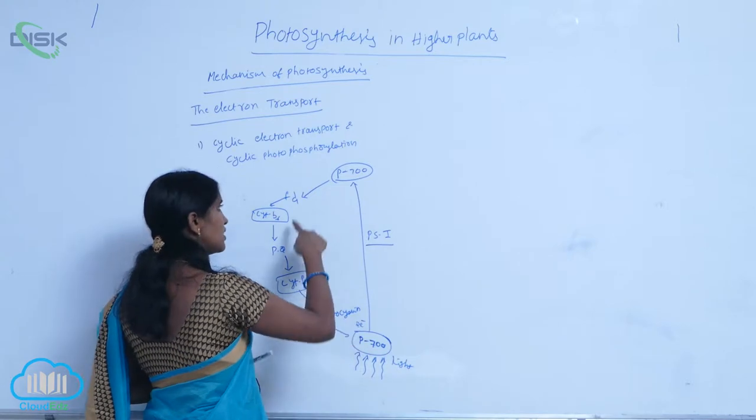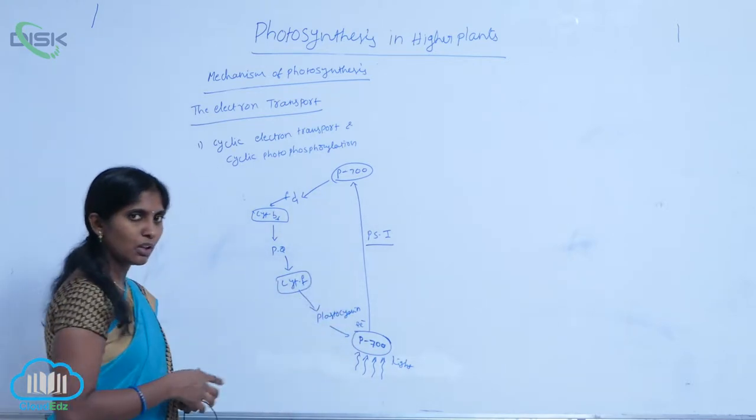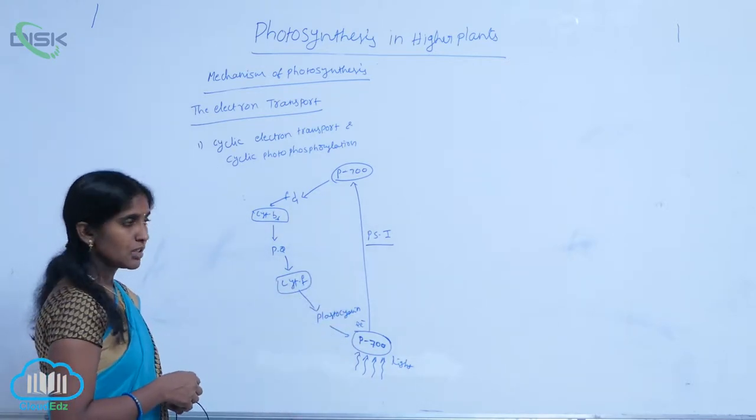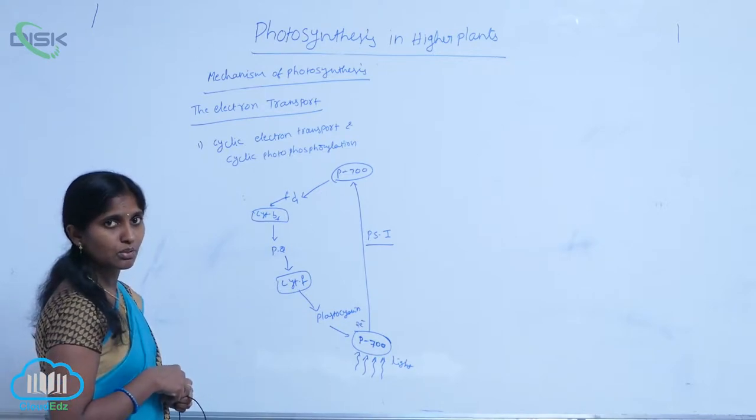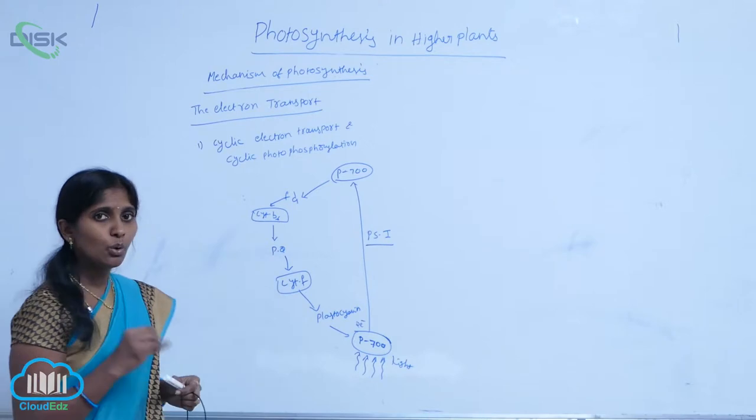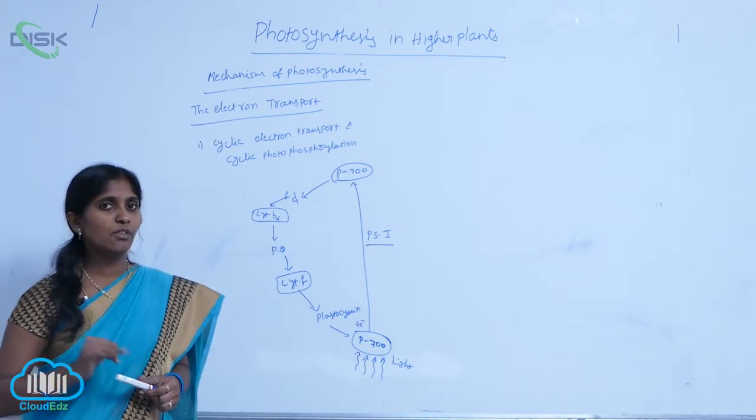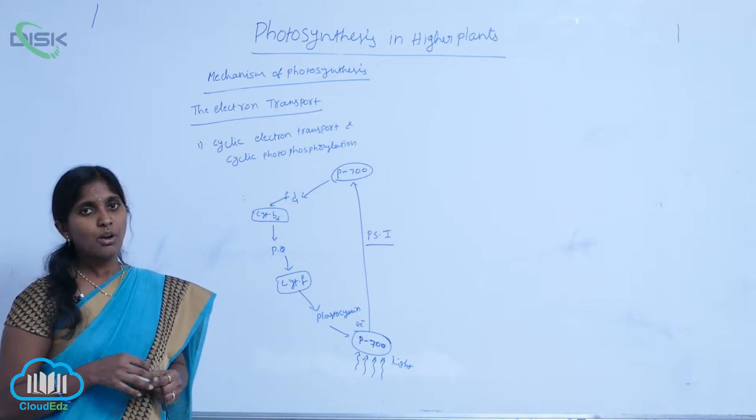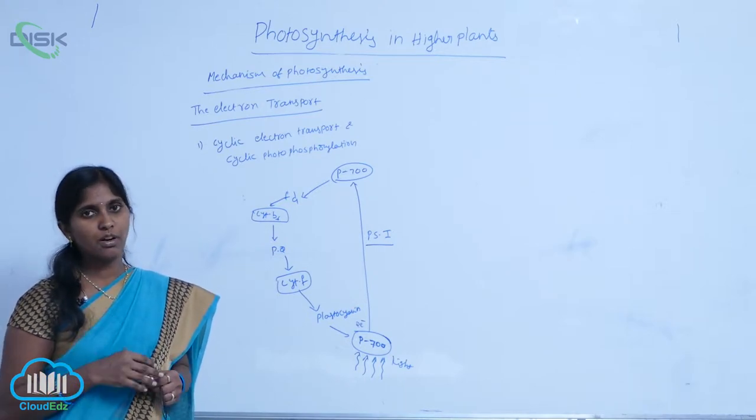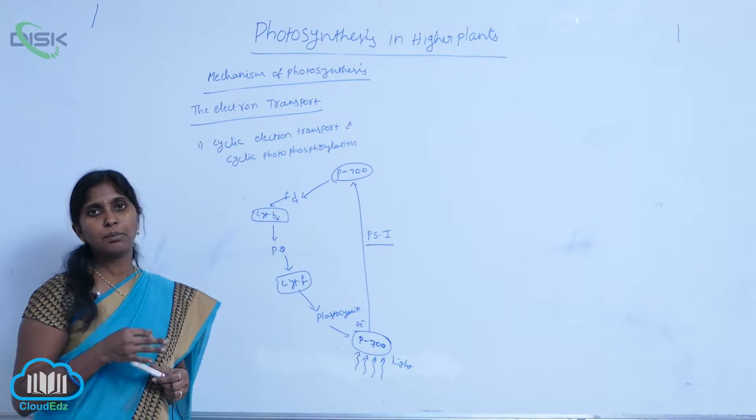The electrons circulate only within PS1, which is why it's called cyclic electron transport. In this process, no water molecules are cleaved, no oxygen is released, and no NADPH2 is formed. Only ATP is produced.